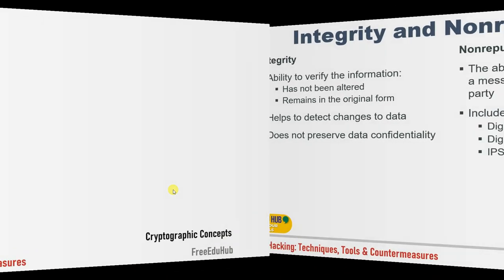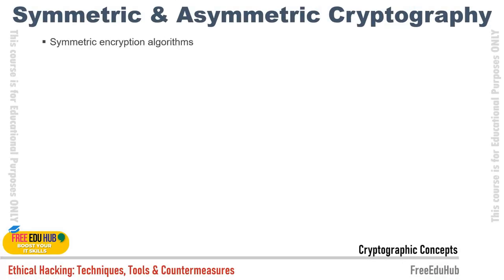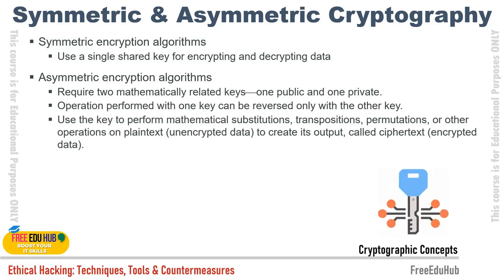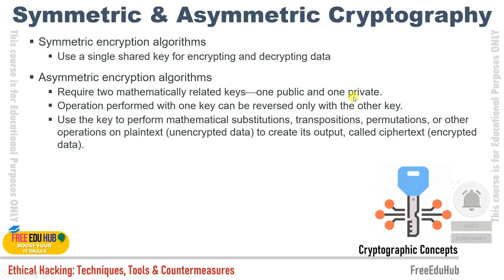Symmetric encryption uses a single shared key for encrypting and decrypting data — any reference to single-key encryption is symmetric encryption. Asymmetric key algorithms require two mathematically related keys: one public and one private. In symmetric, one shared key is transferred over the network, which poses a risk if leaked. In asymmetric encryption, we have a key pair — a public key and a private key.